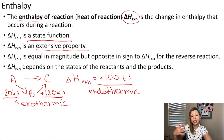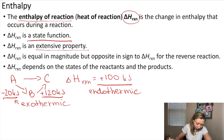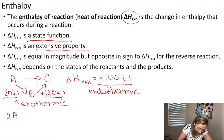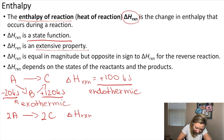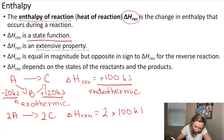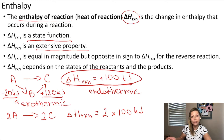Since enthalpy is an extensive property, this means that if you double the amount of the reactants and products, your enthalpy change will also double. For example, if I have the reaction 2A making 2C products, my enthalpy change associated with the reaction will be 2 times 100 kilojoules, just because my original reaction for half of the amount was 100 kilojoules.